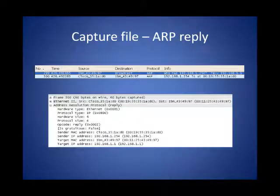Here's the ARP reply coming back. We can see that the MAC address has been filled in. We can also see that the address fields have been swapped because this is going back the other way. The host would now take this information, fill the Ethernet frame for the destination, and also populate the ARP table.